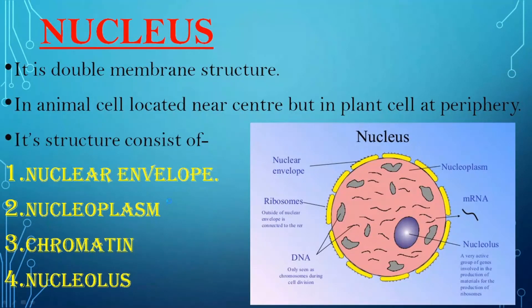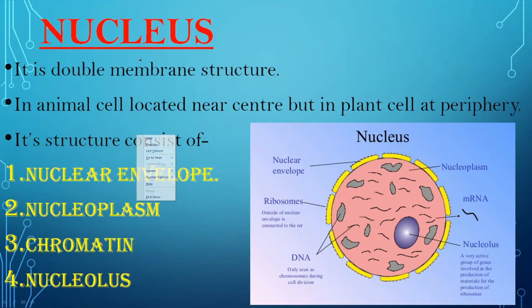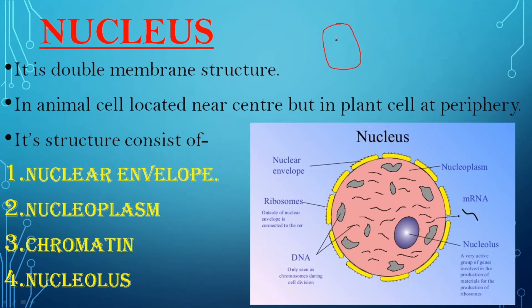With this, cytoplasm is complete. Now coming to the next topic, that is nucleus. A nucleus is a double membrane structure. In animal cells it is located near the center, but in plant cells it is at the periphery. In prokaryotic cells the DNA is naked — it simply lies in the cytoplasm.